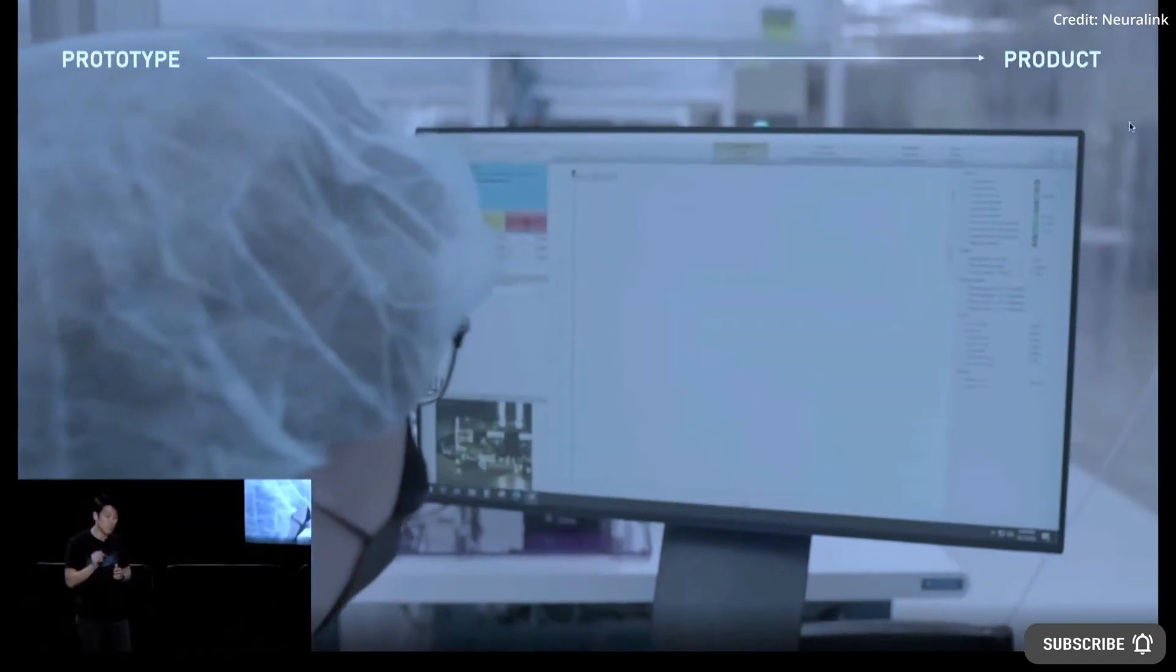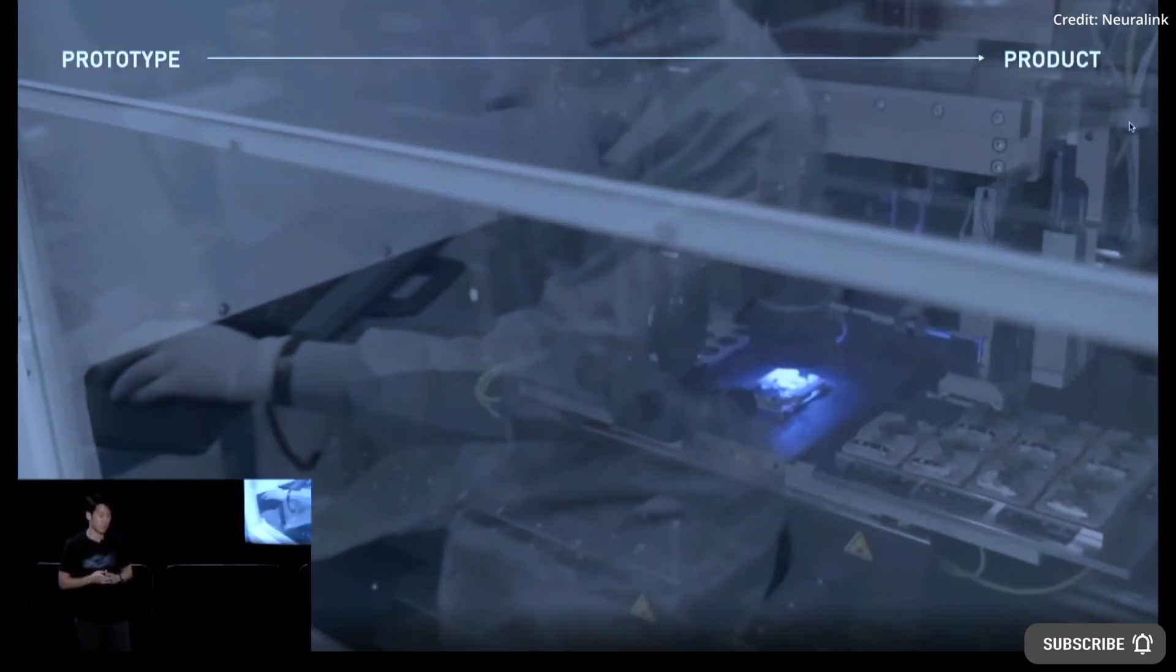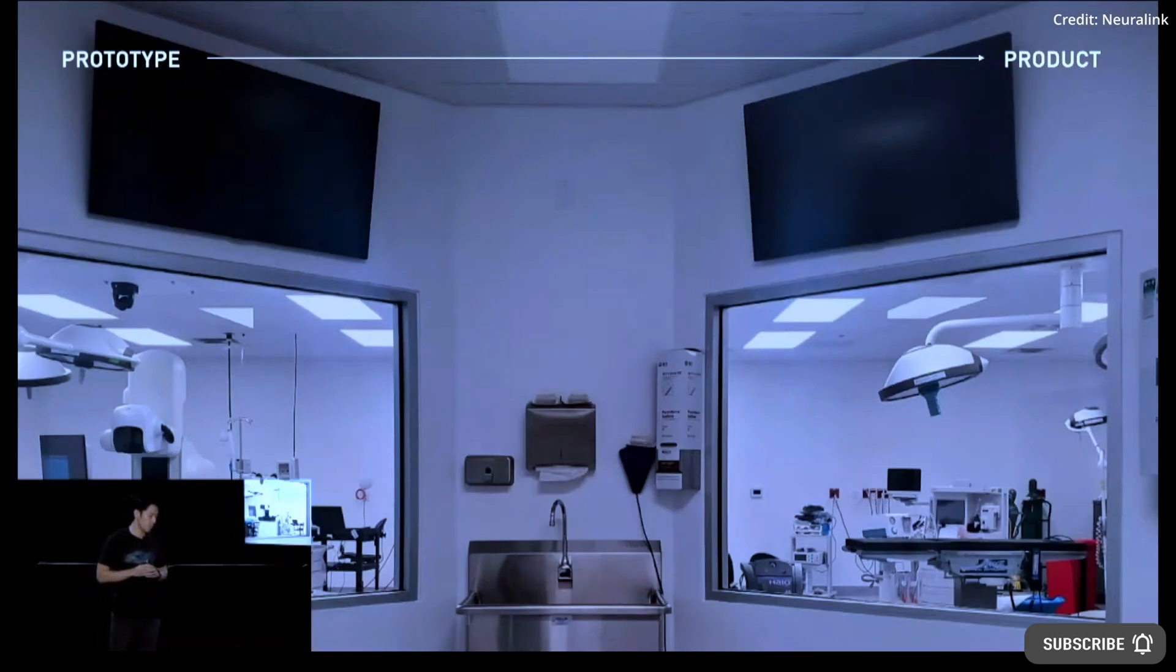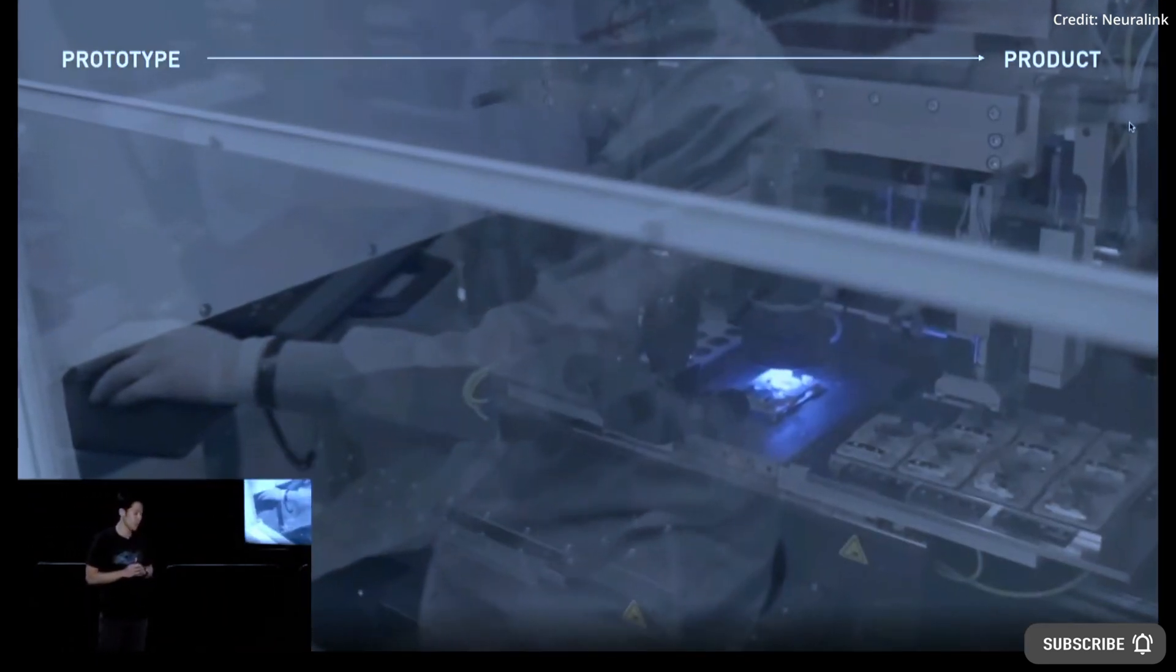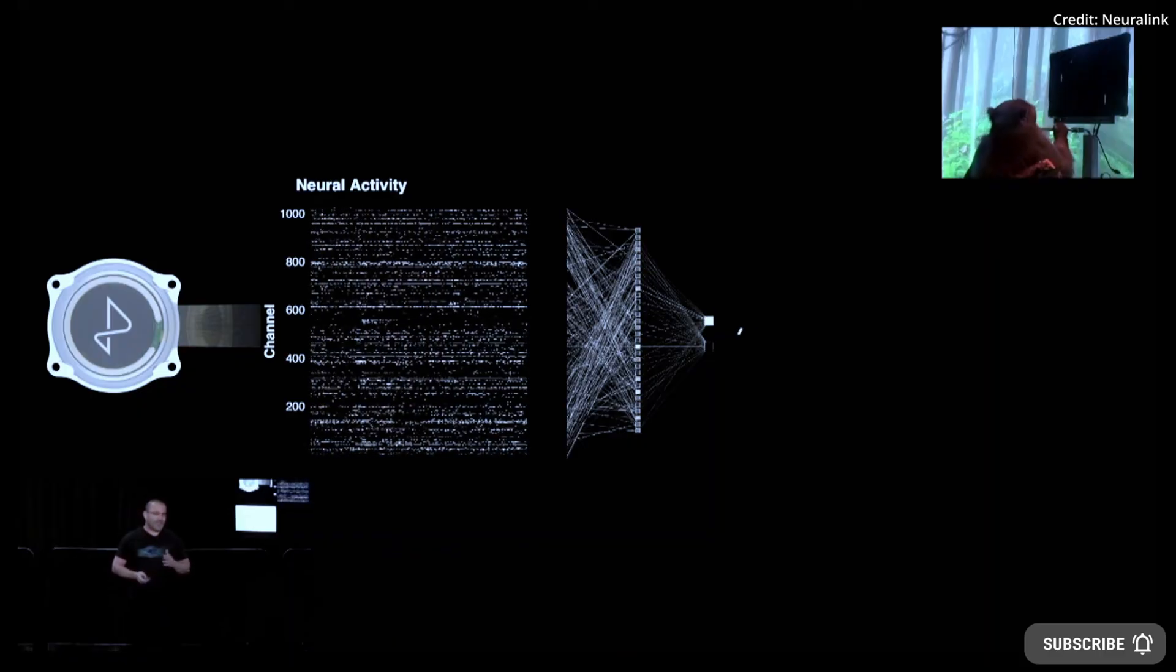The N1 Link is a starting point for a new kind of brain-computer interface. As the technology develops, Neuralink aims to increase the channels of communication with the brain, accessing more brain areas and new kinds of neural information with the help of artificial intelligence.